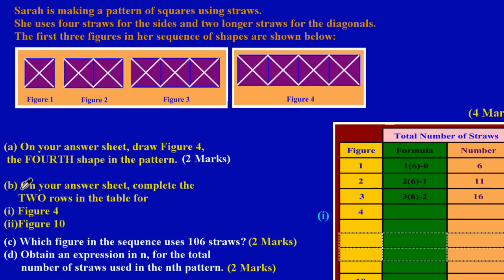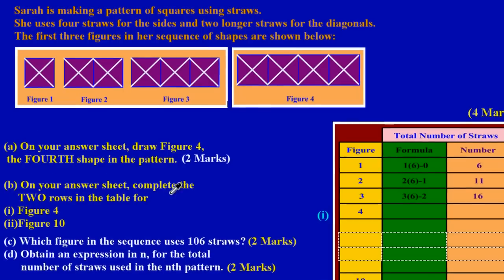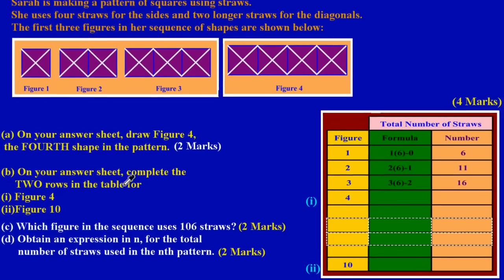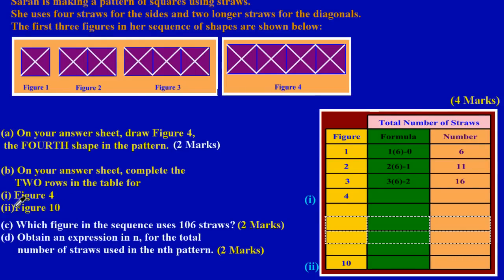Now in part B, they're asking us: on your answer sheet, complete the two rows in the table for figure 4, that's part 1, and figure 10, that's part 2. Now here if you look across, we have our table, and this is B part 1. They want us to insert the appropriate values in this row.